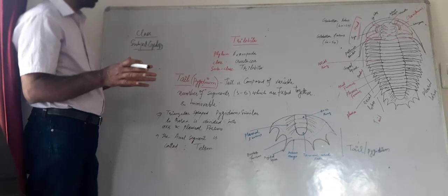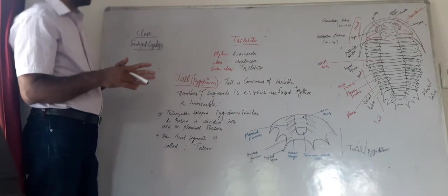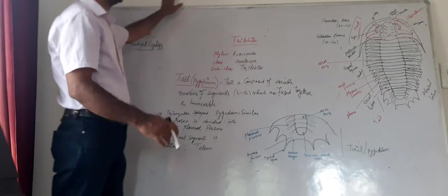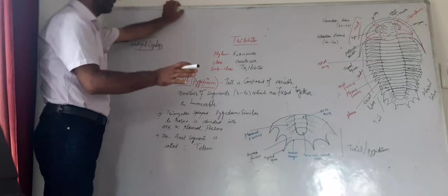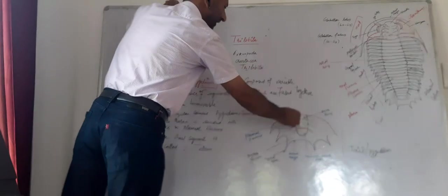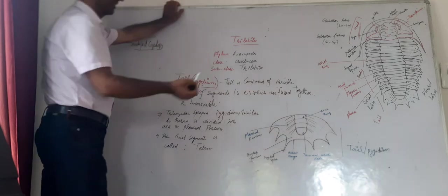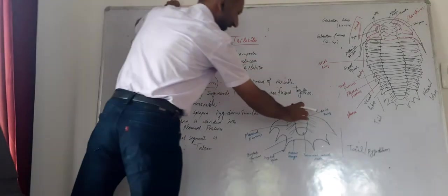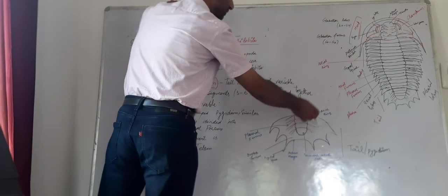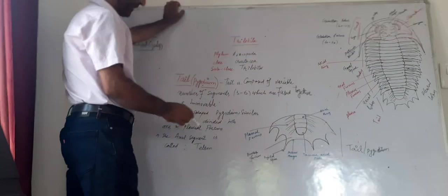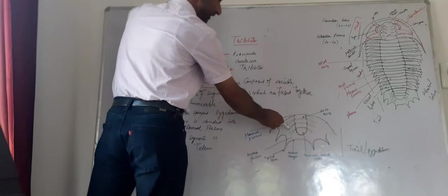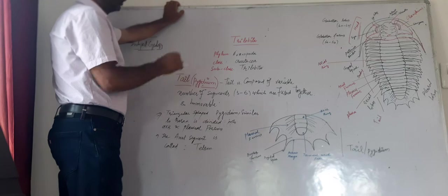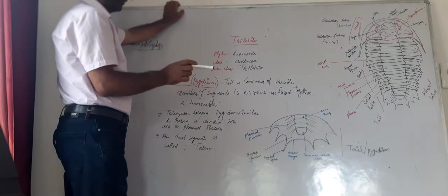Aur iski shape similar jaisa triangle ke shape jaisi hai. Aur ek similarity ismein hai ki iski similarity body ki similarity yaani body jaisi shakal hai. Iski body mein axial lobes hai, pleural portion left and right, isi tarah se body mein bhi hai jis tarah se tail mein hai. Jaise axial ring yahan pe mojood hai, body mein bhi axial ring hai, pleural folds bhi mojood hai tail mein, isi tarah se body mein bhi. That is why it is similar to the thorax part of the trilobite.